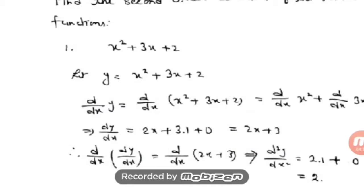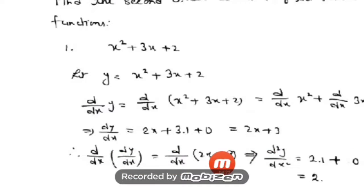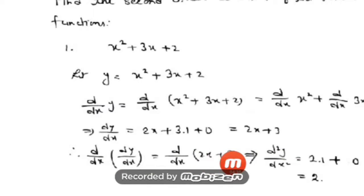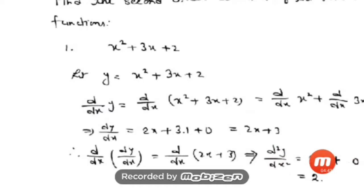Now differentiate again to get the second order derivative: d/dx of (dy/dx) = d/dx of (2x + 3). This is symbolically written as d²y/dx². On the right side, d/dx of 2x is 2 (constant comes out, d/dx of x = 1) and d/dx of 3 = 0. So the answer of d²y/dx² is 2.